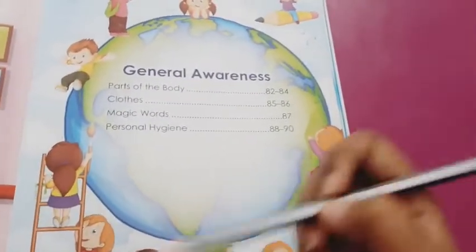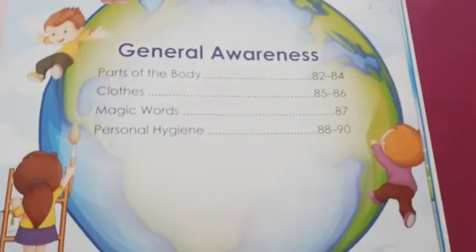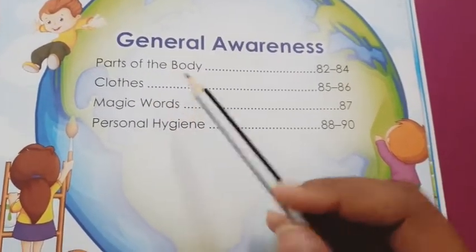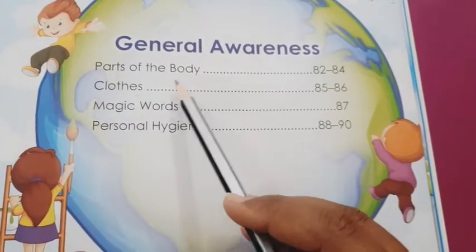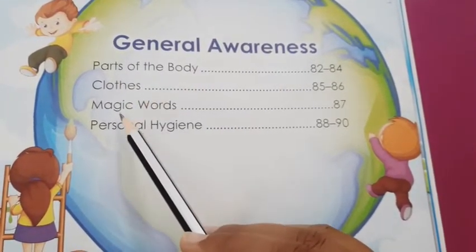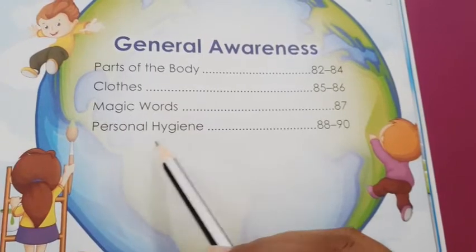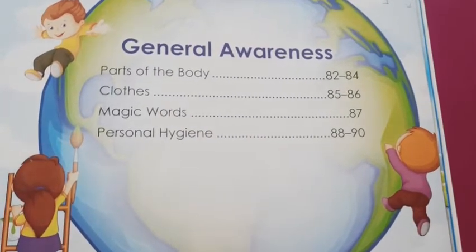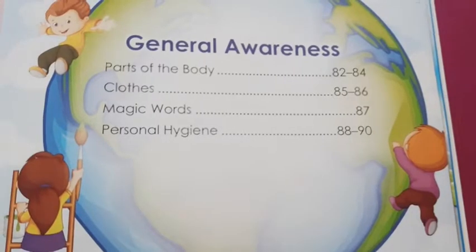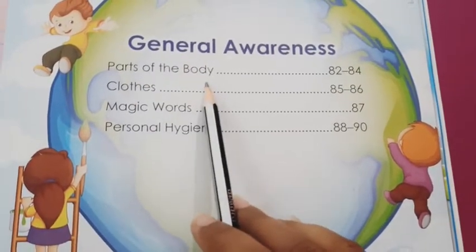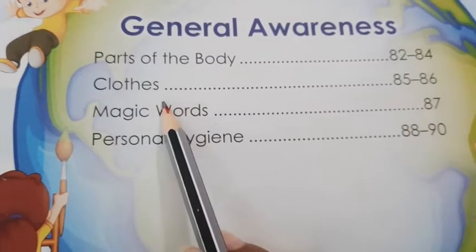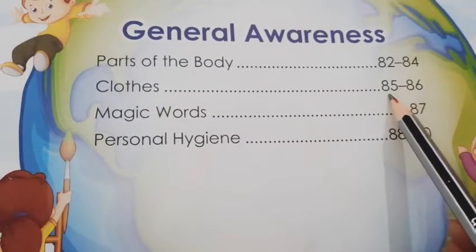Students, as you can see, this is your GK portion. Four topics are given over here: parts of the body, clothes, magic words, and personal hygiene. As you all know, we had completed our first topic, that is parts of the body. Today we are going to start clothes. For that, you need to open page number 85. So let's open it.